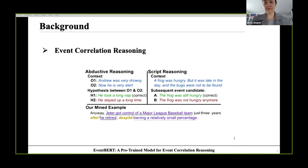There are examples of two downstream event-related reasoning tasks. Abductive reasoning at the left and script reasoning at the right, as well as our created corpus at the bottom. Abductive reasoning aims to infer the most plausible explanation for incomplete observations. Given the two observations, Andrew was very drowsy and now he is very alert, we could infer that he took a long nap is more plausible than he stayed up a long time.